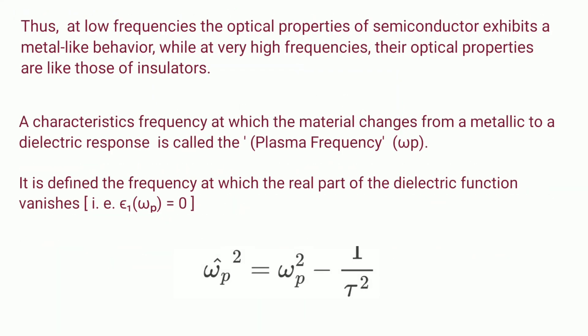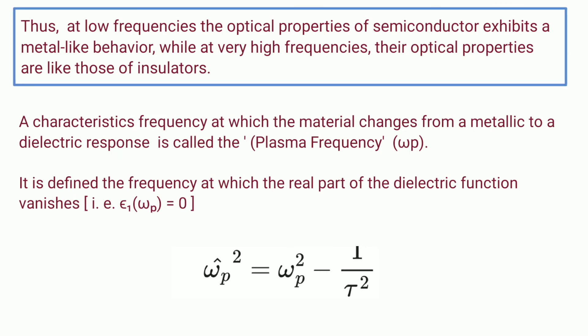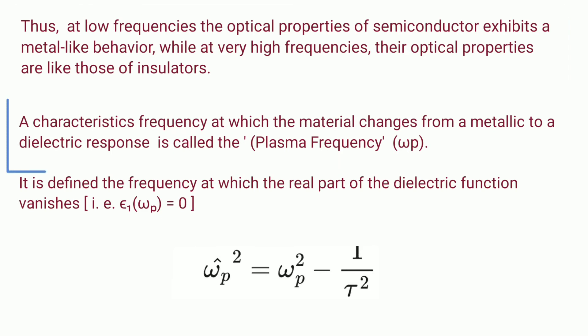Thus, at low frequencies, the optical properties of semiconductor exhibit a metal-like behavior, while at very high frequencies, their optical properties are like those of insulators. A characteristic frequency at which the material changes from a metallic to a dielectric response is called the plasma frequency and it is denoted by ω_p.